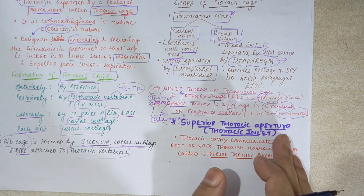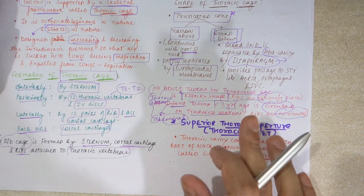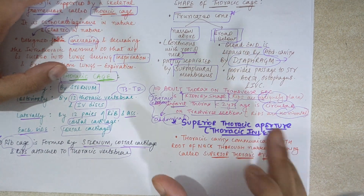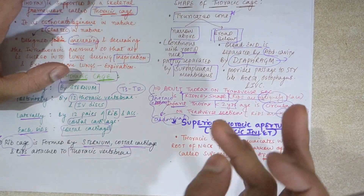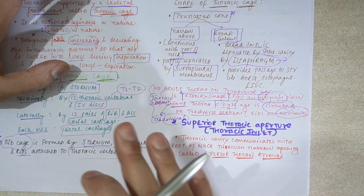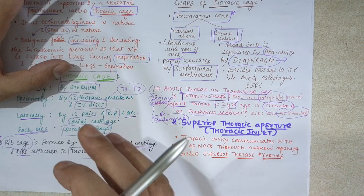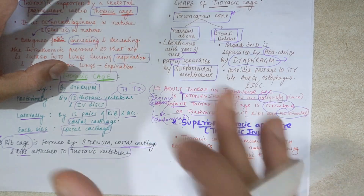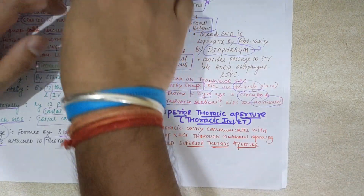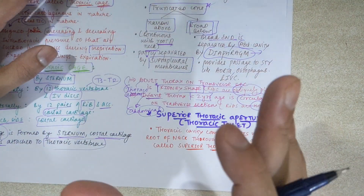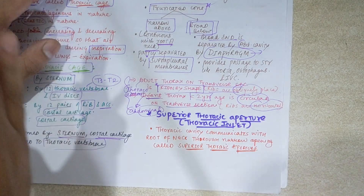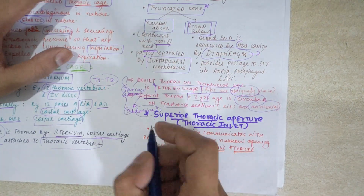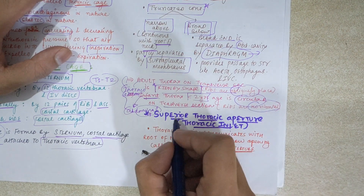Now let's talk about the superior thoracic aperture. The thoracic cavity's main components include the mediastinum and pleural membranes. The mediastinum contains the heart, esophagus, trachea, and major blood vessels. That is a separate topic available on this channel.